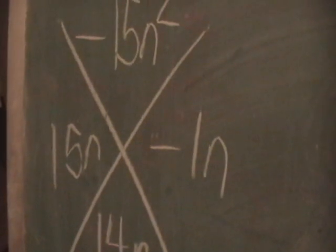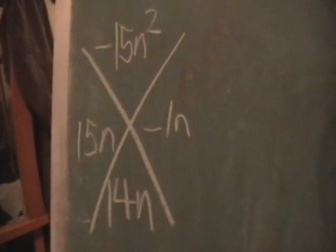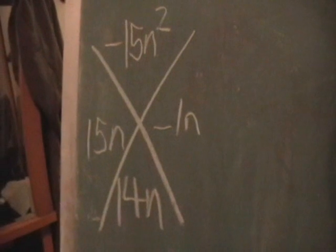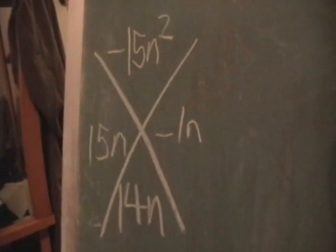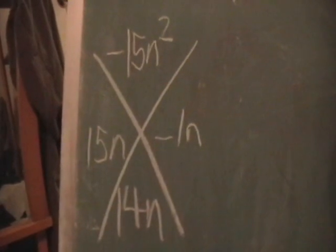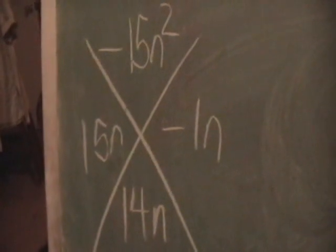Which two numbers multiply together to make negative 15n squared and add together to make 14n? The answers are 15n and negative 1n. Now, I know what you're thinking. Well, gee Anthony, that wasn't too bad at all. In fact, the only difference was the variables. Well, I kinda got bad news for you. That's not all you have to do. I know, I know, I know. But hey, this is like your last step.